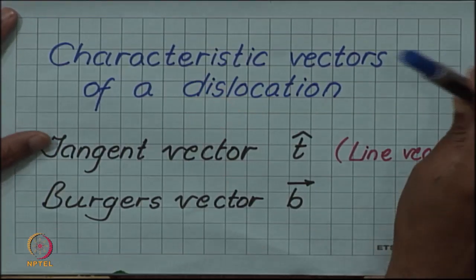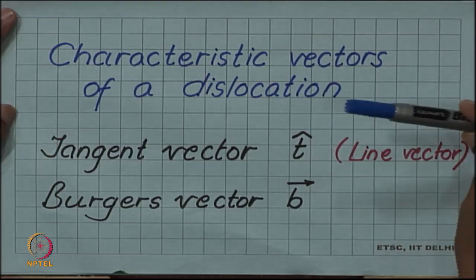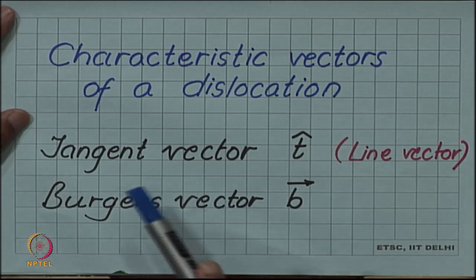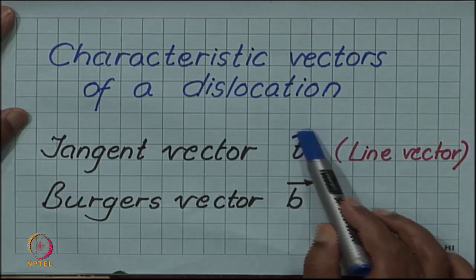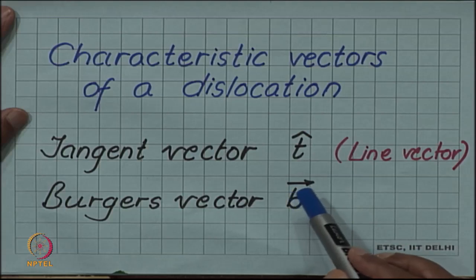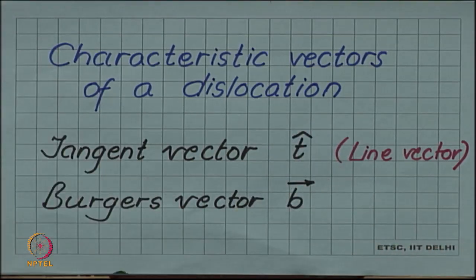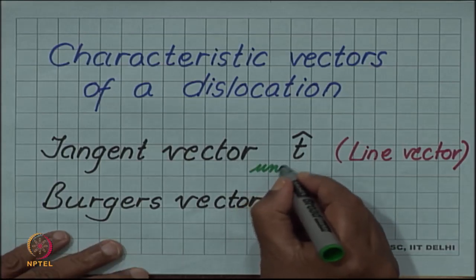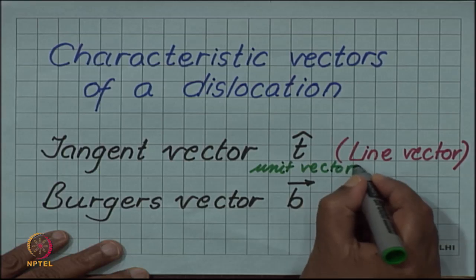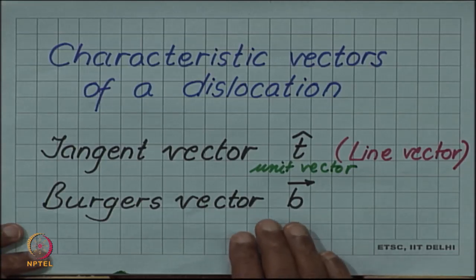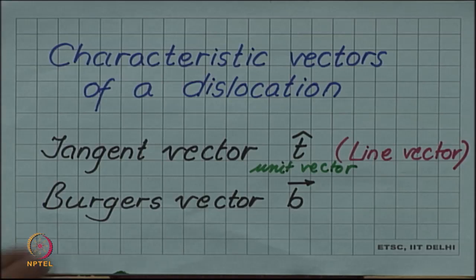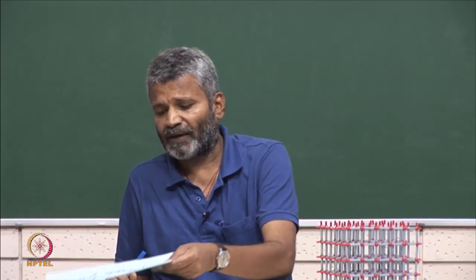Every dislocation is associated with two characteristic vectors. One of them is called the tangent vector or line vector, given the symbol t-hat, which is a unit vector. When discussing the dislocation line as a boundary between slipped and unslipped planes, we also defined the Burgers vector, which gives the magnitude and direction of the slip. These two vectors characterize a dislocation line.